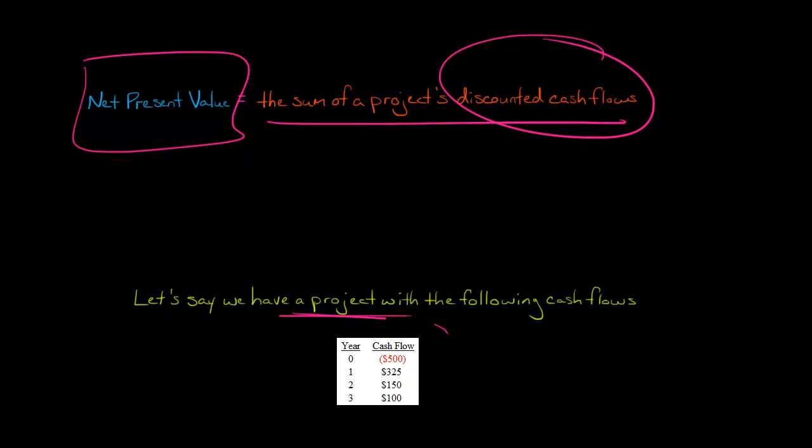Let's say we have a project with the following cash flows. In year zero, which is today, right now, we have a cash outflow of $500. Then for the next three periods, we have cash inflows of different amounts. We have a cash inflow of $325 one year from today, two years from today a cash inflow of $150, and then three years from today a final cash inflow of $100.